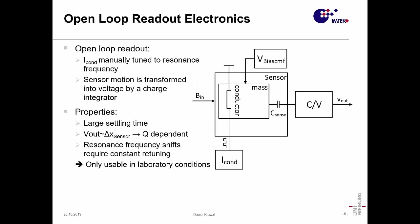Now on to the readout electronics. This is a very basic way to drive such a sensor. We have a sensor schematic here in the middle. We have the conductor, the sensor mass, the sense capacitance that we use to detect the motion, the biasing of the mass which is the back electrode, the conductor current, and a charge to voltage converter that gives out a voltage proportional to the sensor motion.